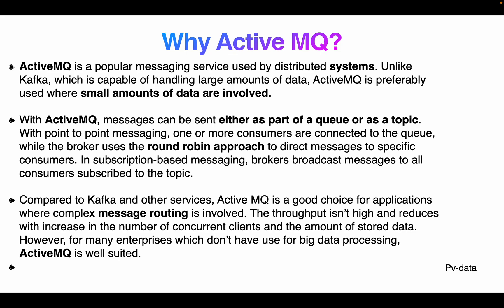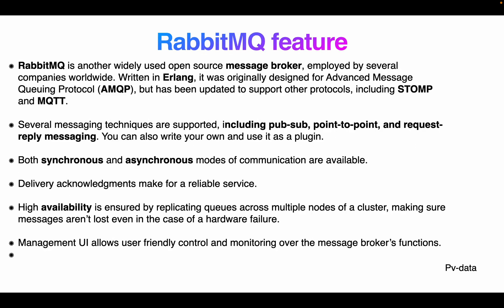With ActiveMQ, messages can be sent either as part of a queue or a topic. In point-to-point messaging, one or more consumers are connected to the queue while the broker uses a round-robin approach to direct messages to a specific consumer. In subscription-based messaging, the broker broadcasts messages to all consumers subscribed to a topic. Compared to Kafka, ActiveMQ is a good choice when complex message routing is involved.